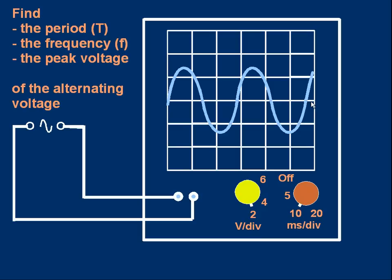Now, look at the settings we're using. And see if you can answer these questions. What is the period? That means the time for one full cycle. What is the frequency of the vibrations? How many cycles or vibrations are there per second? What is the peak voltage? What is the maximum voltage of this alternating supply? Pause the video to see if you can answer those questions.